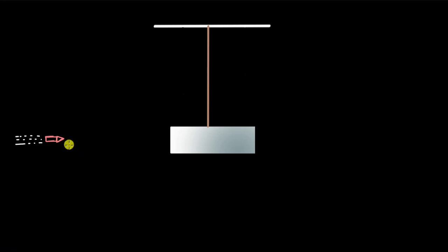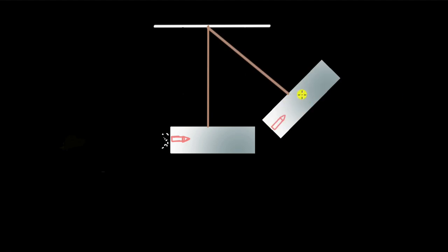Can we measure the speed of this bullet using just this block and a string? The answer is yes. We have this bullet coming towards this block, it strikes the block, and because of that the bullet and block start moving forward together, reaching a state of rest at the maximum height point.